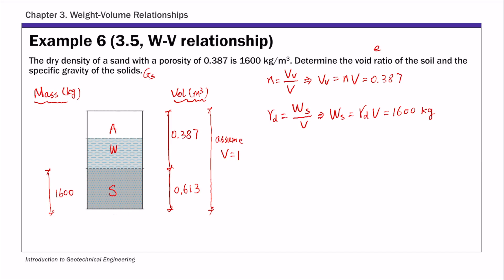Then the void ratio e, by definition, is Vv over Vs, volume of voids over volume of solids. So volume of voids is 0.387, volume of solids is 0.613, and this gives us 0.63.